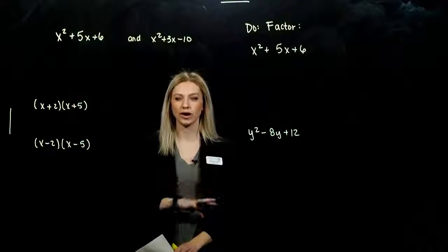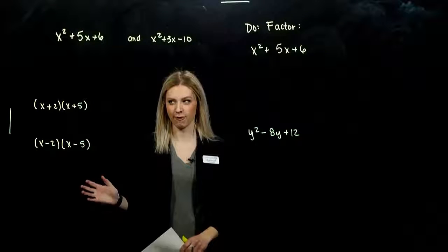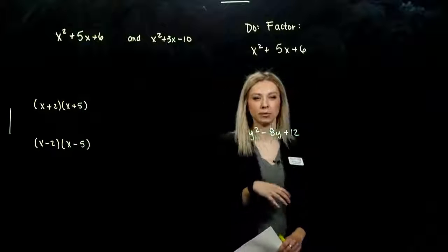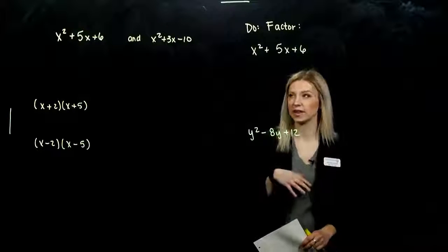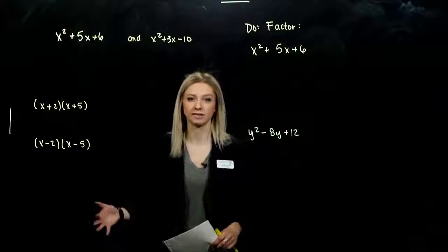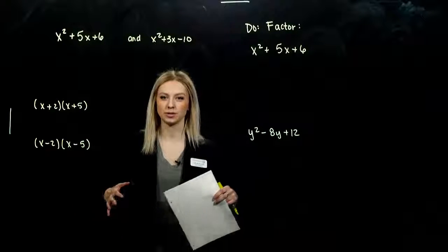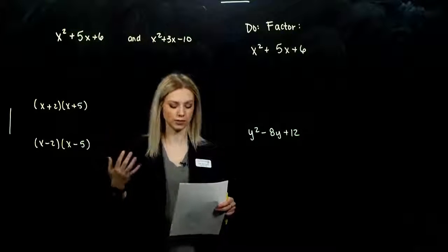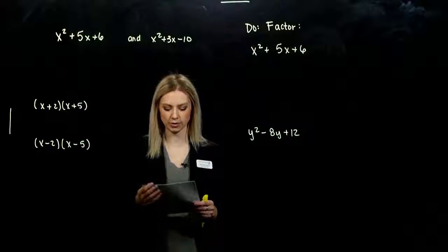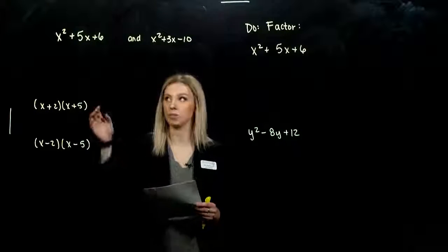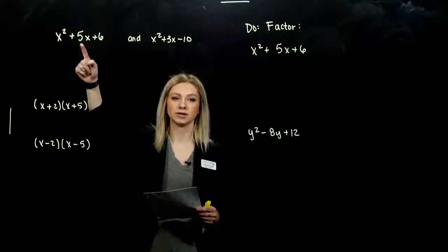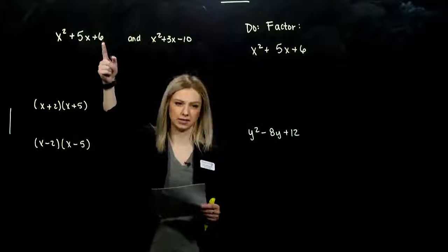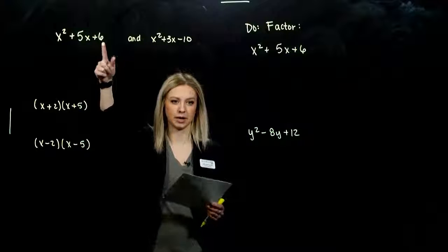We can look at taking out the greatest common factor of a polynomial. Now we're actually going to look at the next step. After we've done that, how do we start to factor trinomials? So this is the first case we're going to look at — trinomials of that form: x squared plus some constant times x, plus c, some other constant.